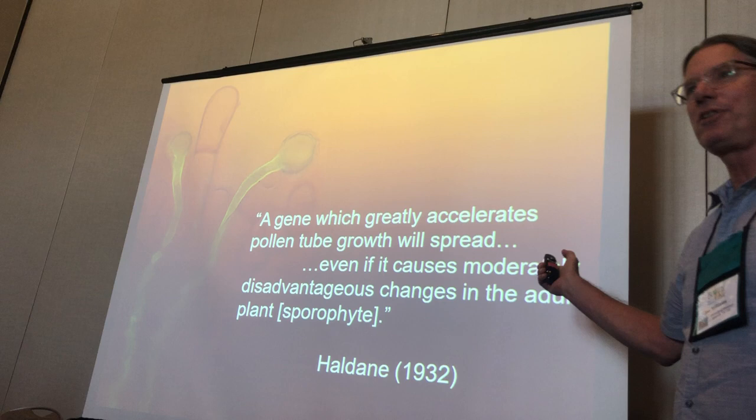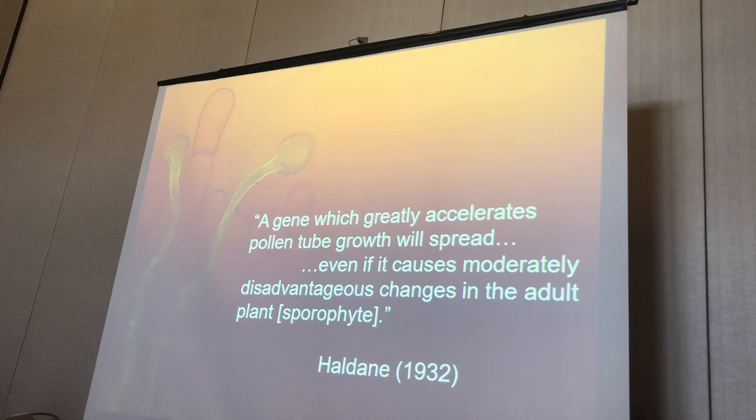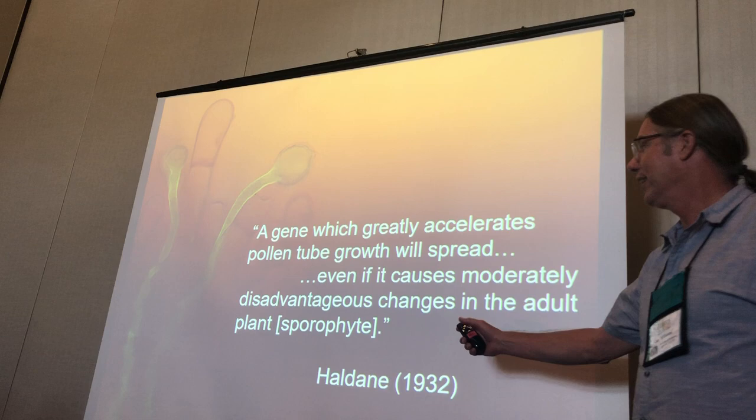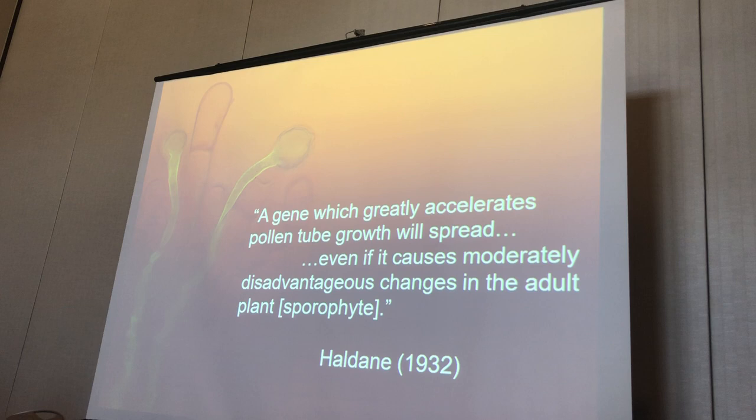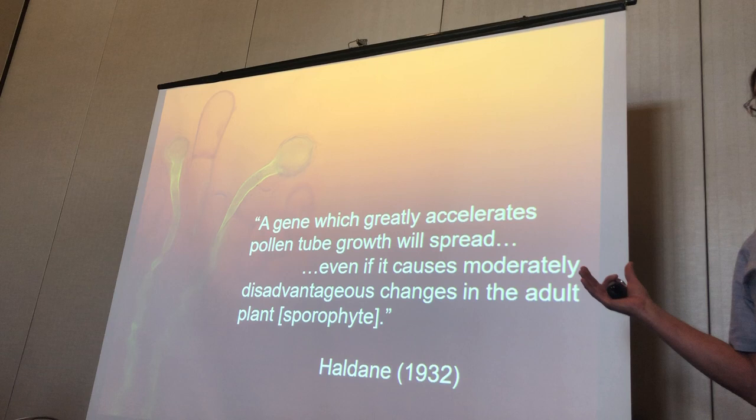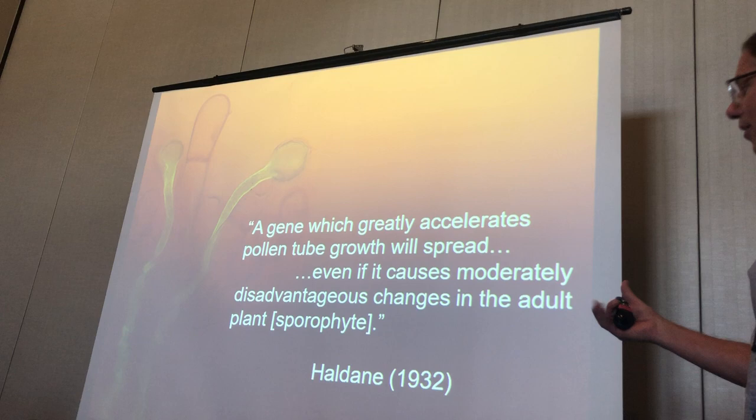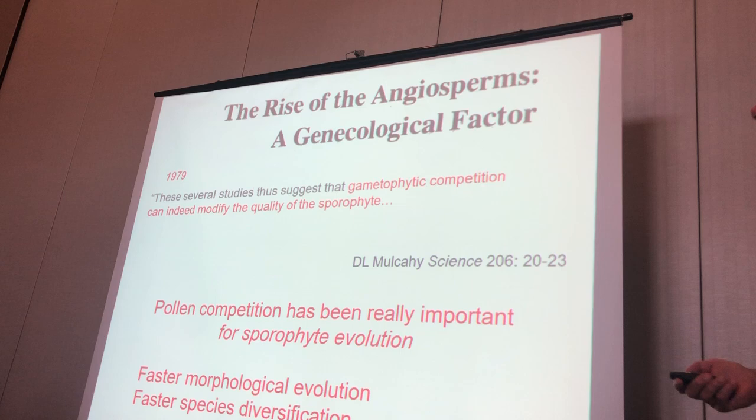I thought I'd start with this quote, which most of you probably already know: 'A gene that greatly accelerates pollen tube growth will spread even if it causes disadvantages for the adult plant or sporophyte.' I put this in because I like that Haldane recognized early that gametophytes and sporophytes have semi-independent evolutionary trajectories. They clearly influence each other, but they are independent — they have an independent morphology and evolution.